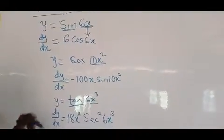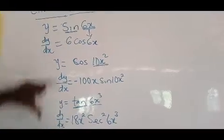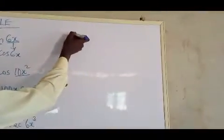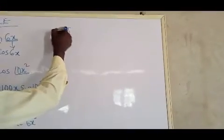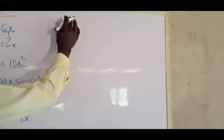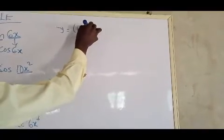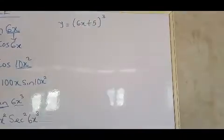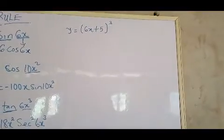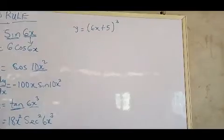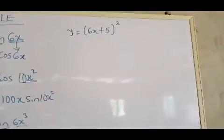That is how you differentiate questions in this form. Now let's look at the other form. Let's say y equals (6x + 5)³. How do you differentiate this kind of question? It is very simple.